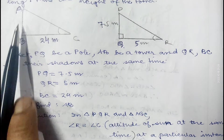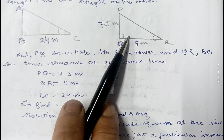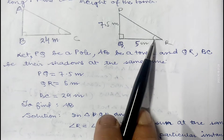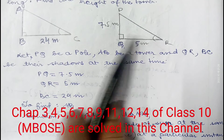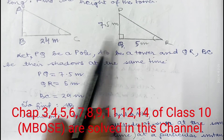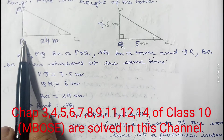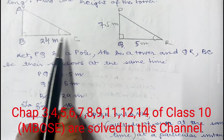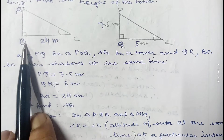Now in triangles ABC and PQR, we find that angle R equals angle C because these two are the altitude of the Sun at the same time. Since we are measuring the angles at the same time, these two angles must be equal. Again, this angle is 90 degrees and this is also 90 degrees. So in these two triangles, two angles are equal: angle R equals angle C, and angle Q equals angle B.